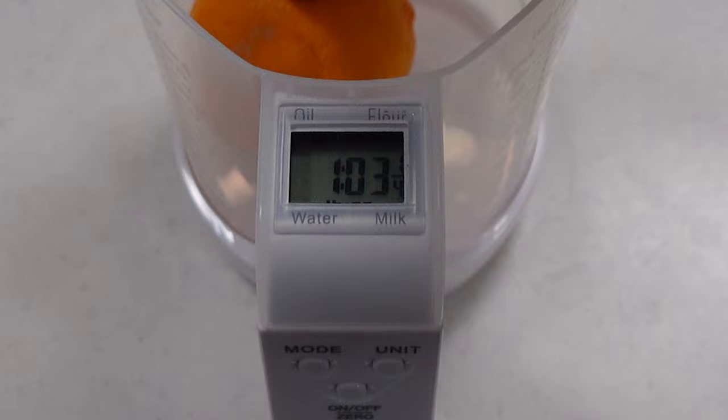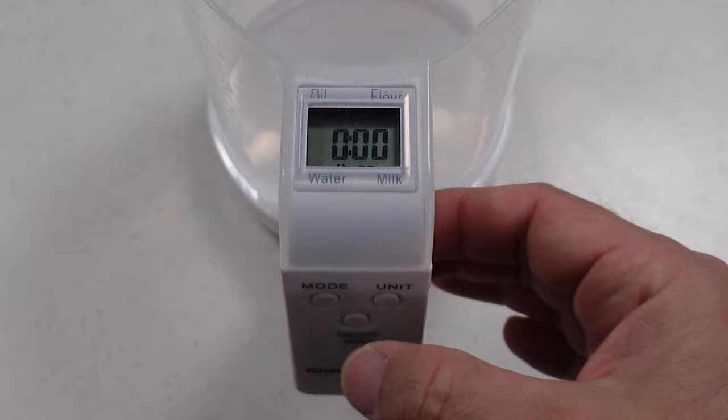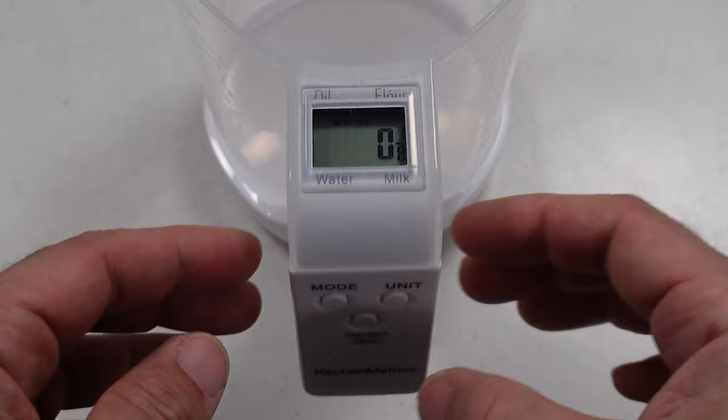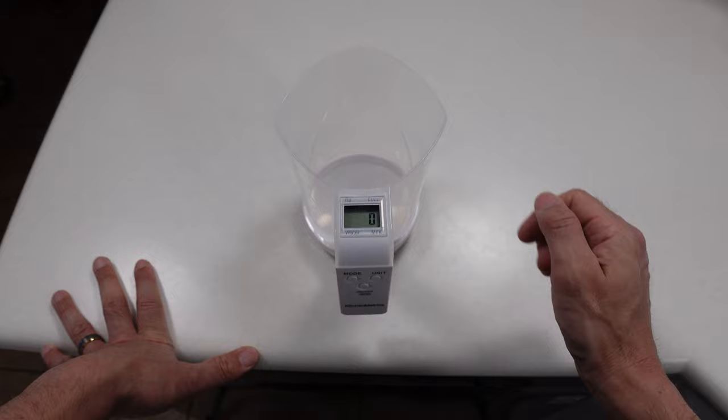Other than the scale, we have four other modes. Obviously right now we're on scale, and cycling through these buttons will highlight these different things. So now we're on water, then milk, then oil, and then flour, and this is meant to actually use the measuring cup function on this.